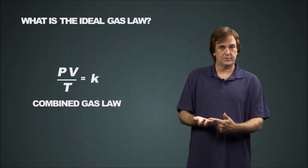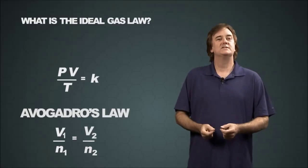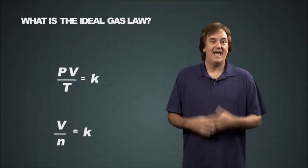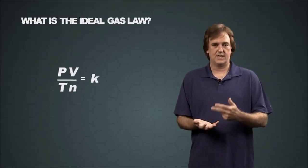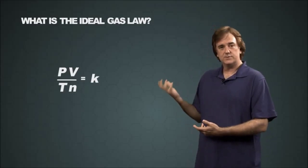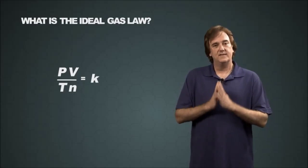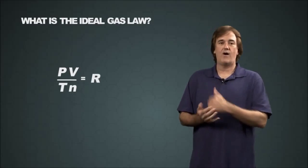We now add in Avogadro's Law which is simply putting an n for the number of moles in the denominator. And now we've got pressure times volume over temperature times moles. All of that equals a constant. But this time the constant is rather special. This constant has a name. We're going to change it from K to an R.